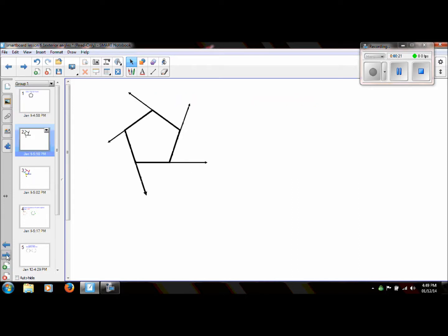And if I were to take all of the sides and extend each one of them, I would create five exterior angles. So I have an exterior angle here at each vertex of the pentagon.